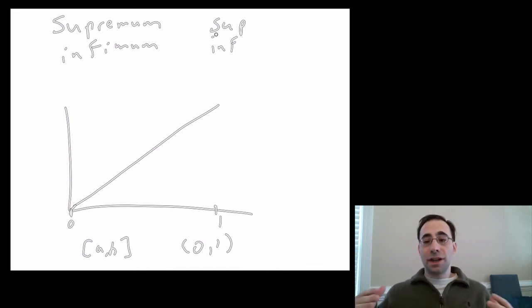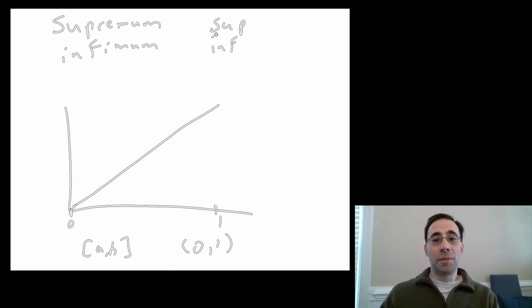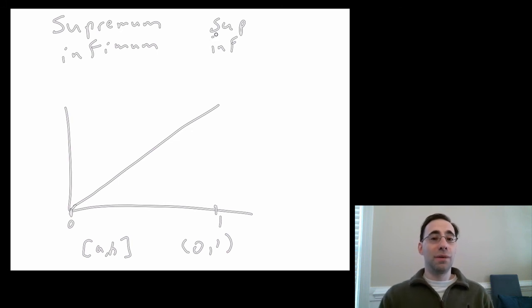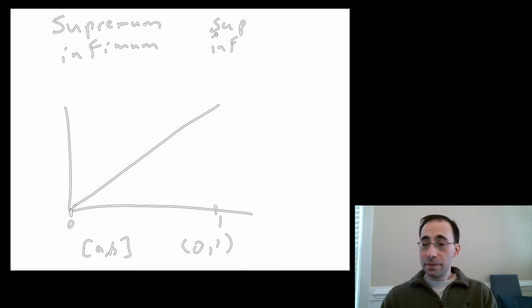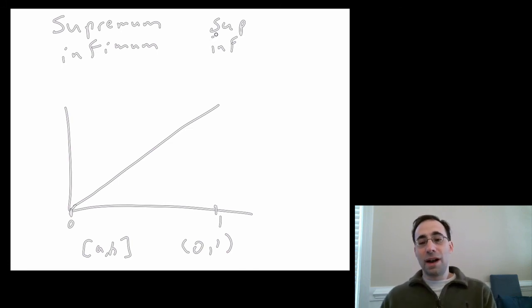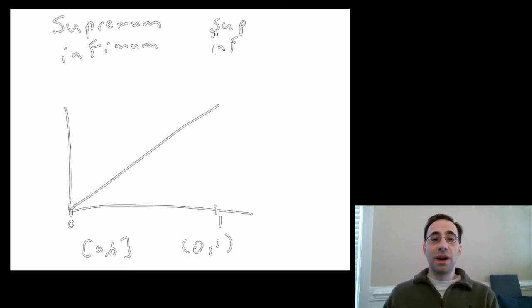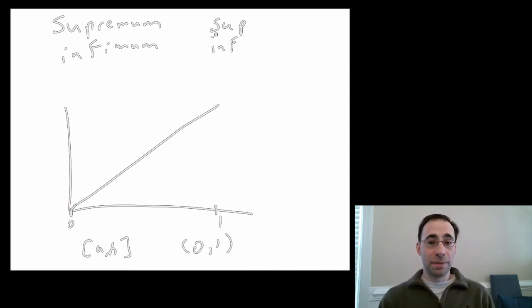So those are the basics: extremum — what they are, maximum and minimum, local and global, supremum and infimum. These are the core concepts we're going to use as we go on. First, though, we're going to have to learn a little more about how functions are shaped, and to do that we're going to have to introduce higher-order derivatives, which we'll do in the next module. Thank you very much.